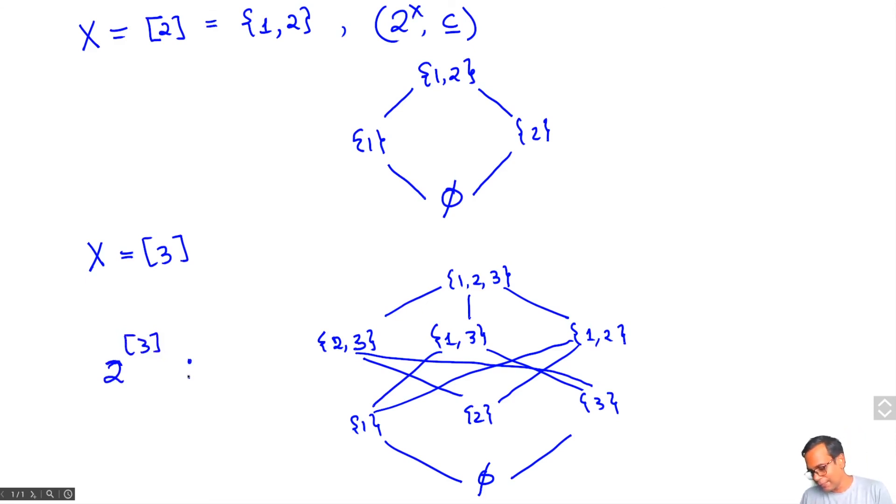From this picture, you know exactly which element is greater than or equal to which other element because an element x is greater than or equal to y, at least in a finite partially ordered set, if you can find a sequence of directed edges going from x and ending at y.